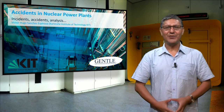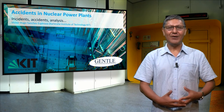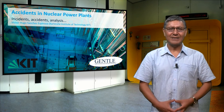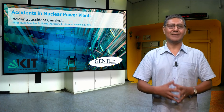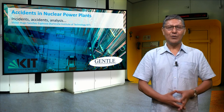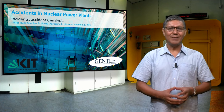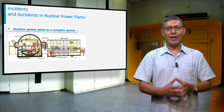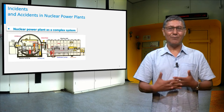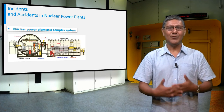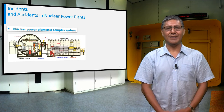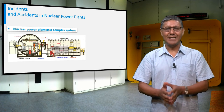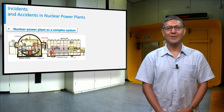As promised during the previous lecture, we will now have a look at how accidents in nuclear power plants are analyzed. We will also discuss briefly the Fukushima accident. I would like to remind you of the complexity of a nuclear power plant — it consists of many components, systems and subsystems.